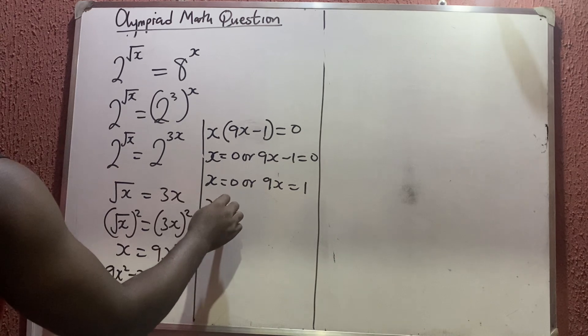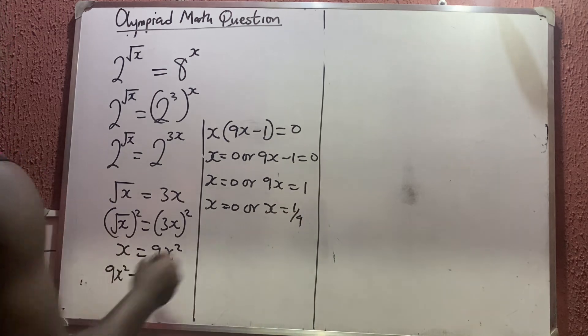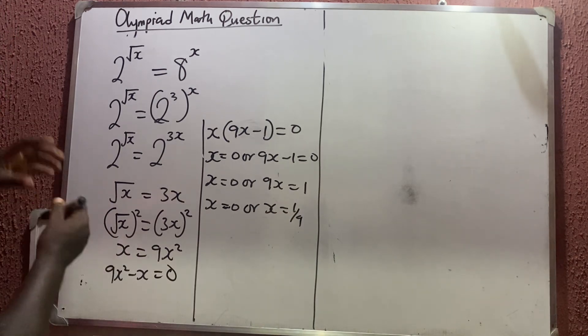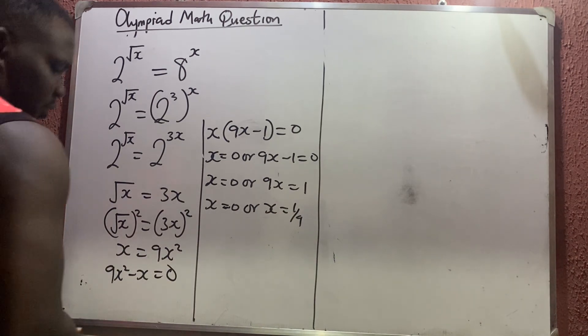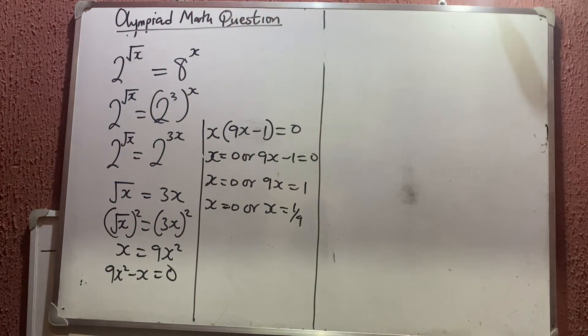So x is equal to 0, or x is equal to 1 over 9. So these are the solutions to this question. Thank you very much for watching. Please give this video a like and subscribe if today is your first day of watching us. Bye-bye.